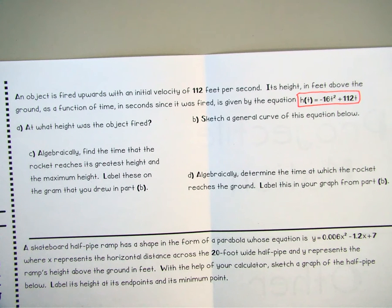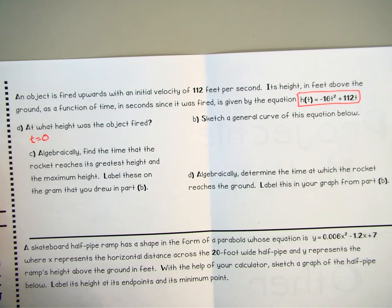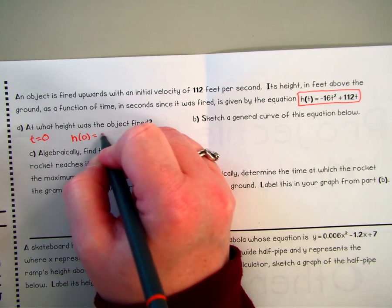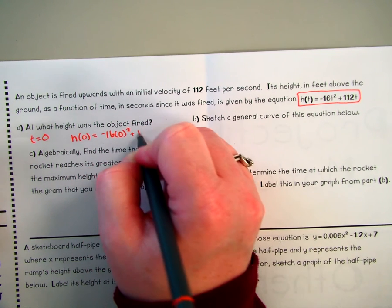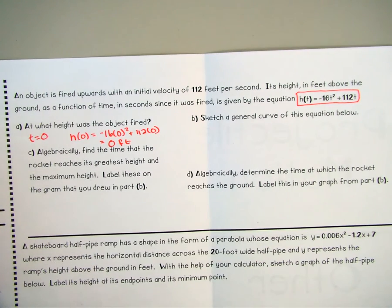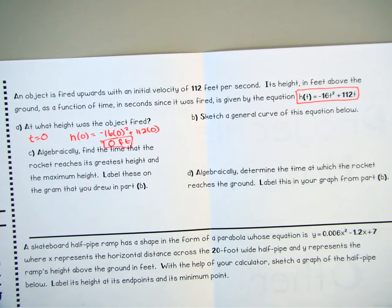So they want to know at what height was the object fired? So at what height was the object fired? So that means we're looking at time of zero because the object was fired at the very beginning of our scenario here that we're looking at. So we're looking at when time is a zero. So if I plug zero into my equation for t, negative 16 times zero squared plus 112 times zero, what do I get? Zero. So it's zero feet is where it is fired at. Zero feet, which means this object is on the ground. They're not up on some cliff. They're not shooting it from a building. This one is on the ground when it gets launched up into the air.